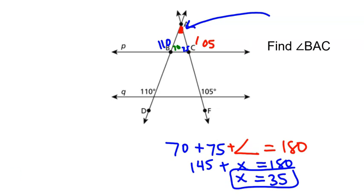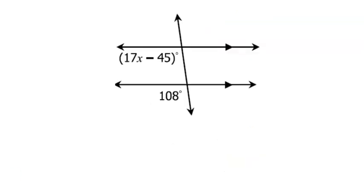Let's try solving some that have algebraic expressions. We're going to use what we know about this obtuse angle here and this obtuse angle there. These angles are corresponding, and corresponding angles are congruent or equal to each other. So we're going to write 17x minus 45 is equal to 108.